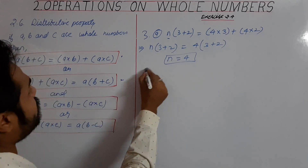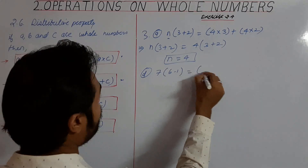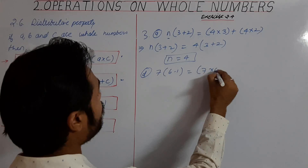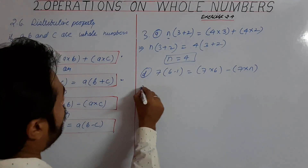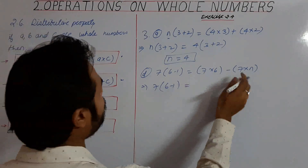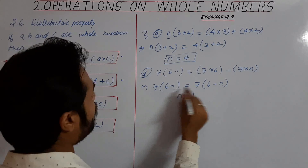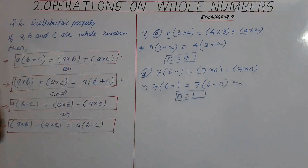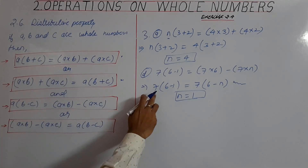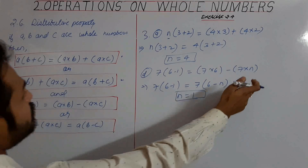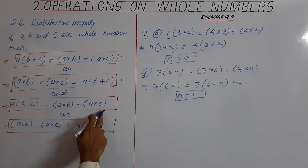Next, we will solve part D: 7 into 6 minus 1 equals 7 into 6 minus 7 into n. If we write 7 into 6 minus 1 and take 7 common, we write 7 into 6 minus n. The value of n is 1. Also, the second line is similar to the statement A into B minus A into C, where A is 7, B is 6, and C is 1. So 7 into n is equivalent to A into C, meaning n equals C, and the value of C is 1.